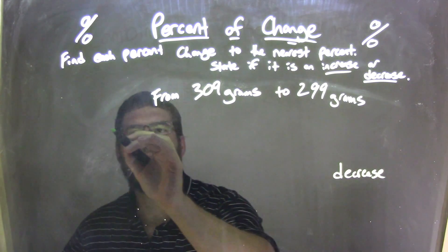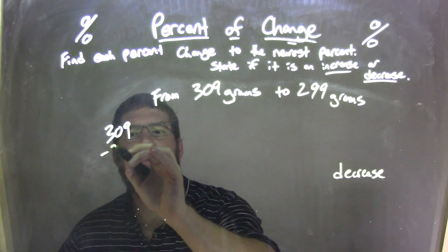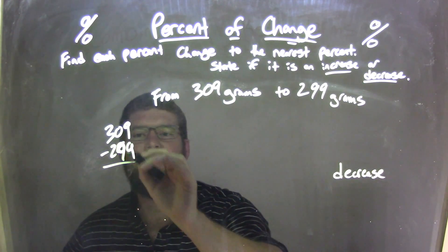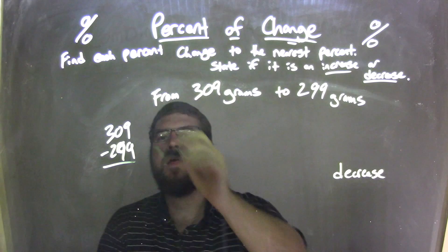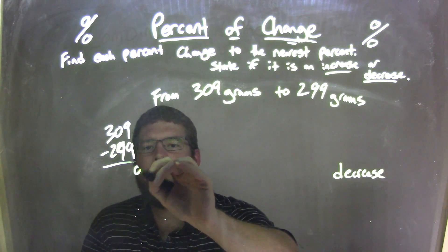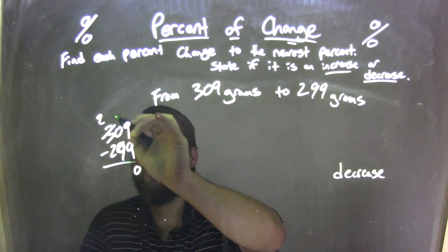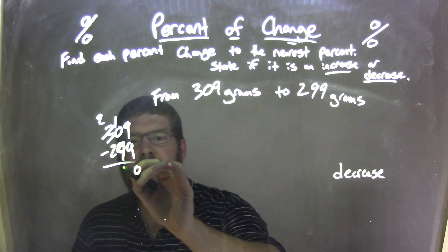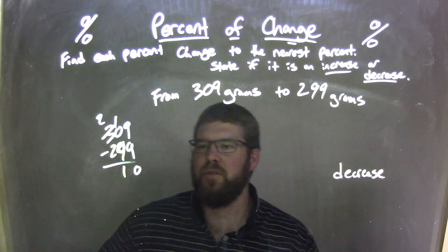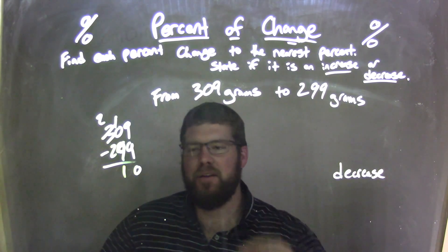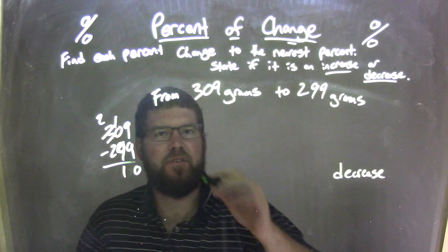So let's go find the difference between the two, 309 minus 299. I almost wrote 209, it looks a little different there, it's okay. 9 minus 9 is 0, 0 minus 9, oh I can't do that, so the 3 becomes a 2, make that a 10, 10 minus 9 is 1, and 2 minus 2 is 0. It's just 10 grams decrease here, and you probably could have seen that from the beginning, but it's all good.